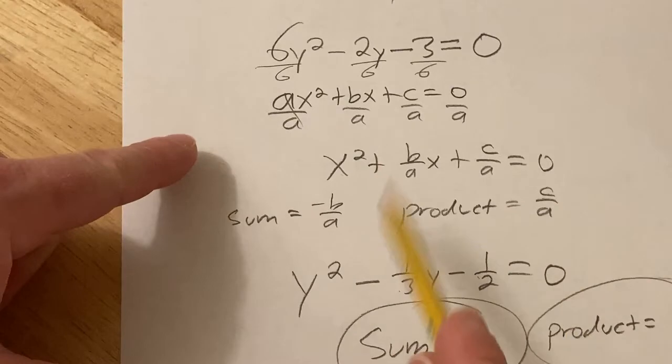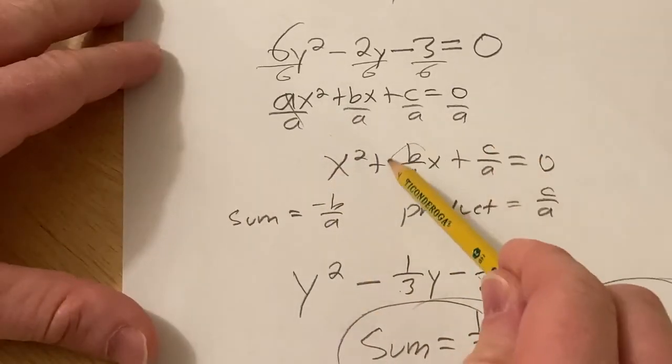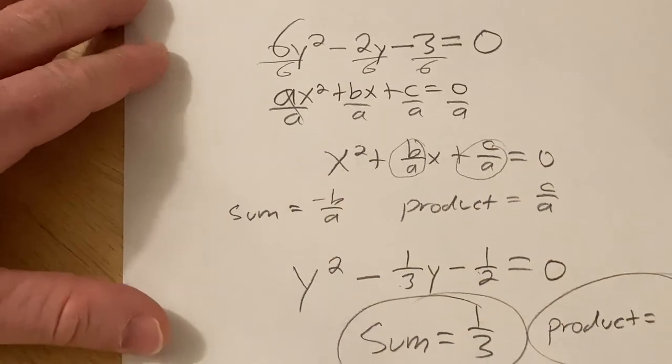So really cool trick, right? So basically you just take this, divide it by a, and then just note the sum is the opposite of this, and the product of the roots is this. And then you can come up with the answers. Pretty simple. Good luck.